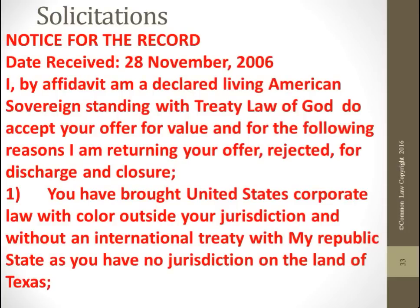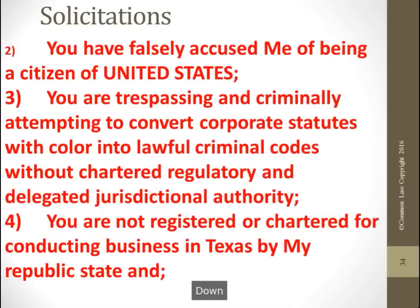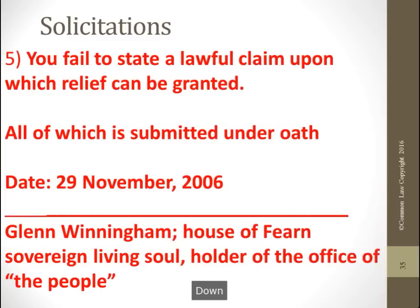This is a notice for the record — I print that on there at 45 degrees in red ink, then sign it. 'I, by affidavit, am a declared living American sovereign standing with treaty law of God. I do accept your offer for value. The following reasons I'm returning your offer rejected for discharge and closure: you brought United States corporate law with color outside your jurisdiction without an international treaty with my republic state; you have falsely accused me of being a citizen of the United States; you are trespassing and criminally attempting to convert corporate statutes into lawful criminal codes without chartered regulatory and delegated jurisdictional authority; you are not registered or chartered for conducting business in Texas by my republic state; and you fail to state a lawful claim upon which relief can be granted — all submitted under oath.'